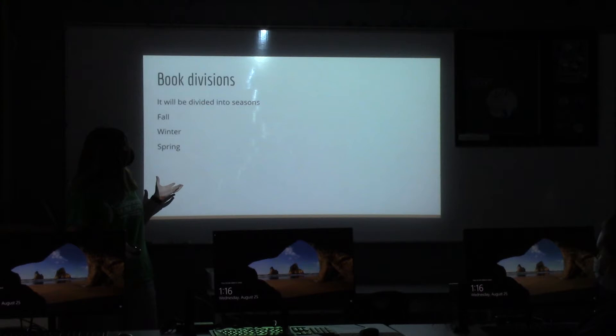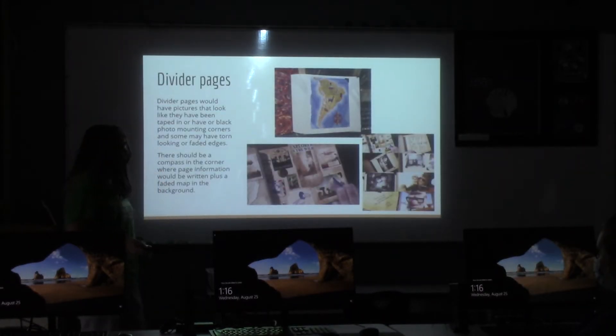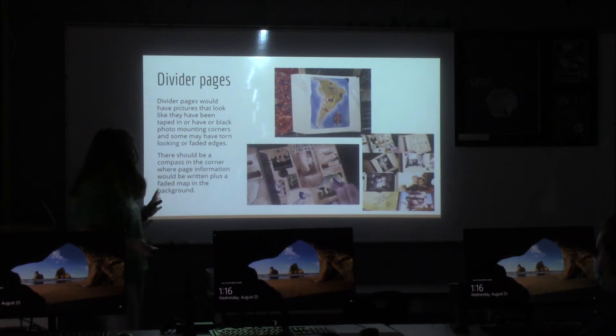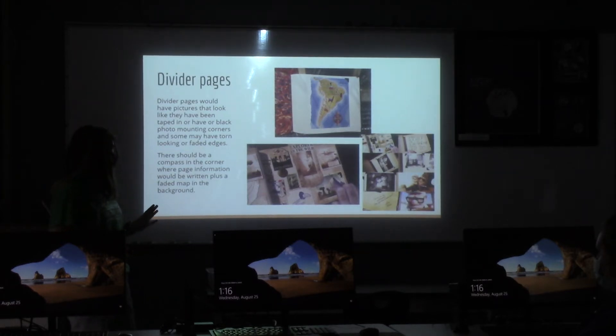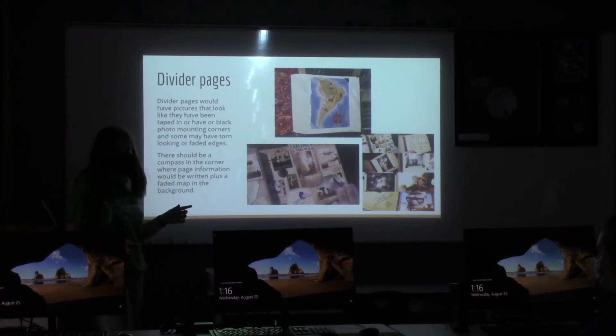It would be divided into seasons. For the divider pages, they would have pictures that look like they've been taped in or have black photo mounting corners with torn or faded looking edges. There should be a compass in the corner where page information would be written, plus a faded map in the background.